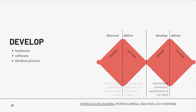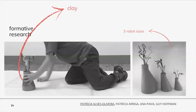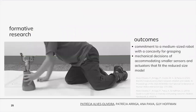The third stage was develop, where we iterated the hardware and software development of the robot through intermediate assessments with children. One formative study examined the robot's size by covering three prototypes with clay, so that children's fingerprints would reveal where and how they held the robot. The major outcome was the commitment to a medium-sized robot with a concavity for grasping.